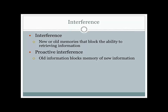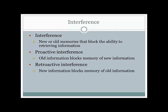The other type of interference is retroactive interference, and this works in exactly the opposite way — new information overwrites or blocks old information from being recalled. Using that same example of knowing Spanish and learning French, it would be retroactive interference if, as you learn the French words for something, you are no longer able to recall how to say the same words in Spanish. It's retroactive because the new information is working backwards to damage old memory, as opposed to old memory reaching forward in proactive interference.